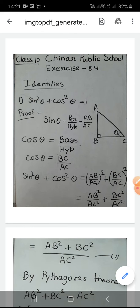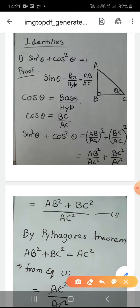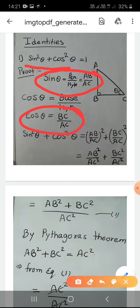Now if I find the ratio: sin θ = perpendicular upon hypotenuse = AB/AC. And cos θ = base upon hypotenuse = BC/AC.